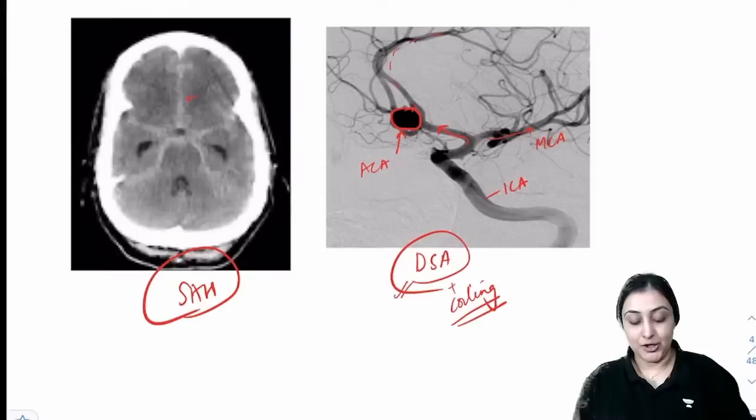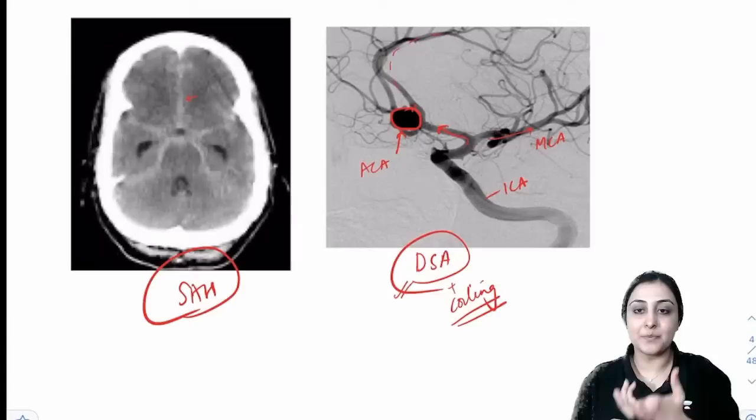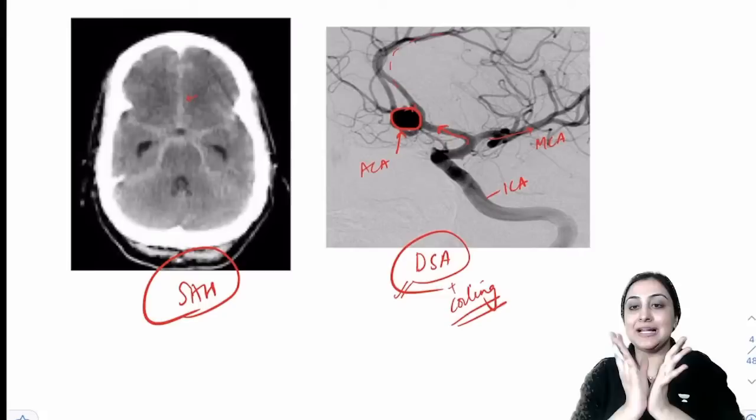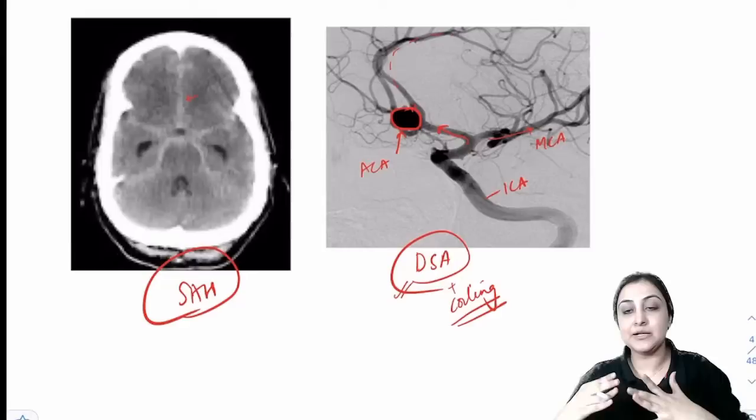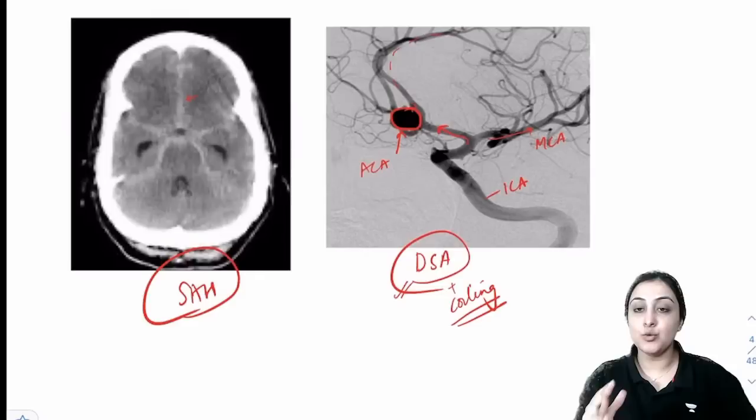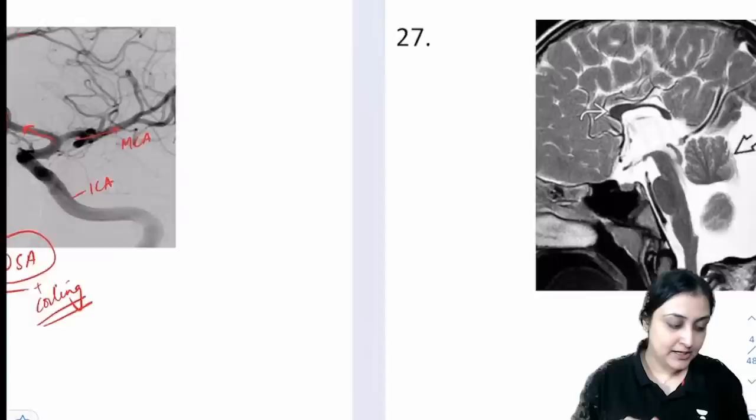An aneurysm at the ACOM will cause optic chiasma compression, resulting in bi-temporal hemianopia. Behind the chiasma, a defect in the optic tract causes contralateral homonymous hemianopia. Remember: up to the chiasma — bi-temporal hemianopia; behind the chiasma — contralateral homonymous hemianopia.